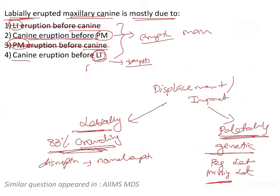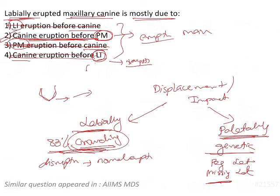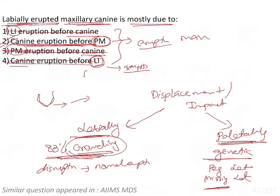If the canine erupts before the premolars, which is not the normal sequence for the maxillary arch, the canine will occupy the space meant for the premolars. When the premolars start erupting, they push the canine forward because there is no space, causing crowding and labial displacement of the canine. Therefore, the answer is: canine eruption before the premolars leads to a labially erupted maxillary canine.